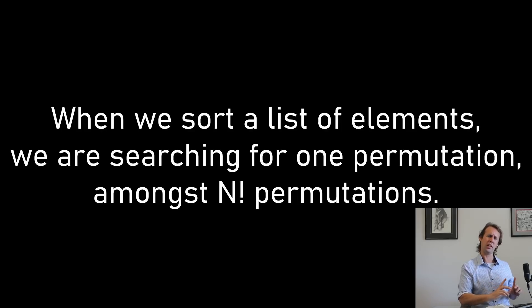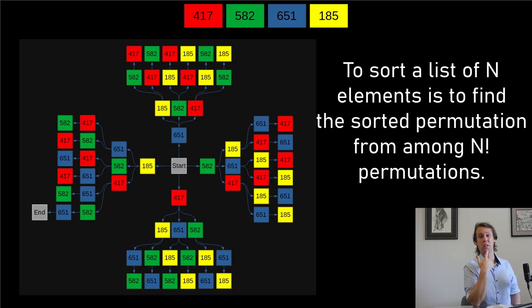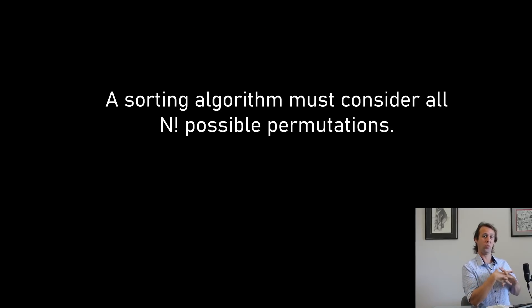All right, but let's just have a bit of a think about what we're doing here. So when we sort a list of elements, what we're doing, in a way, is searching for one permutation amongst n factorial permutations. So sorting, in a way, is very, very closely related to searching, to the point where we could actually draw our little tree from before as a little maze. To sort a list of n elements is to find the single sorted permutation from amongst n factorial permutations. It's pretty much what we're doing. If we've got an algorithm that doesn't consider all n factorial permutations, if it misses some of the possible paths, then there's always a chance that the sorted permutation is one of the paths that we failed to check. So there's no way of getting around the fact that we need somehow to consider every one of those n factorial possible permutations. We can't skip any of them. Any of them that we skip could be the sorted permutation.